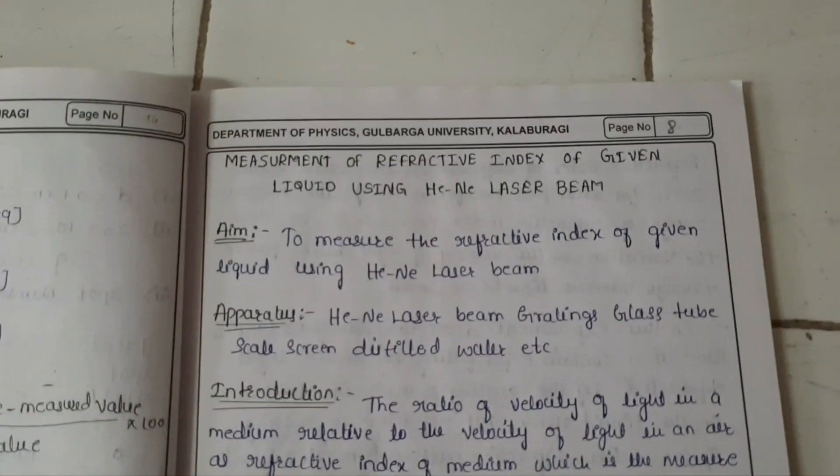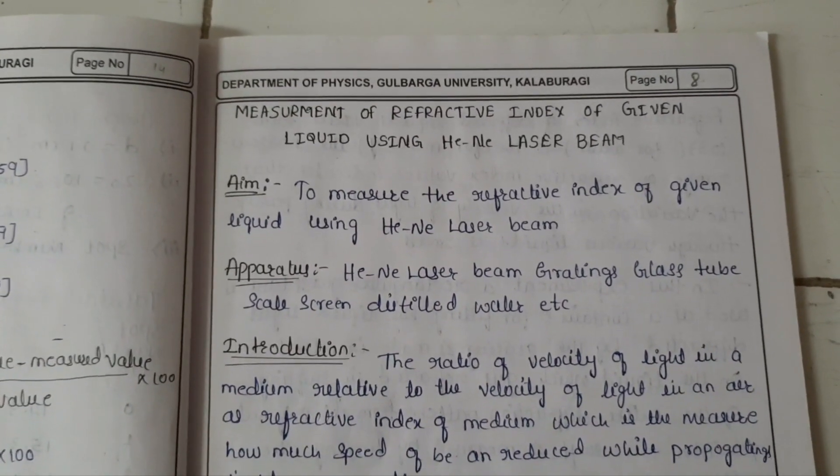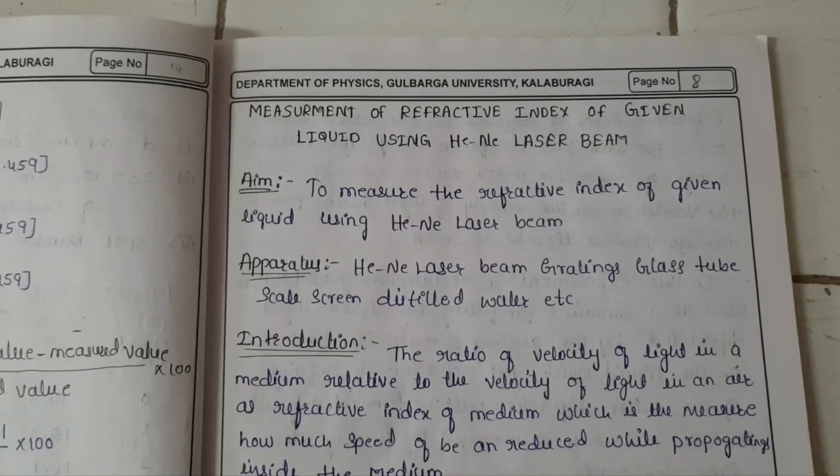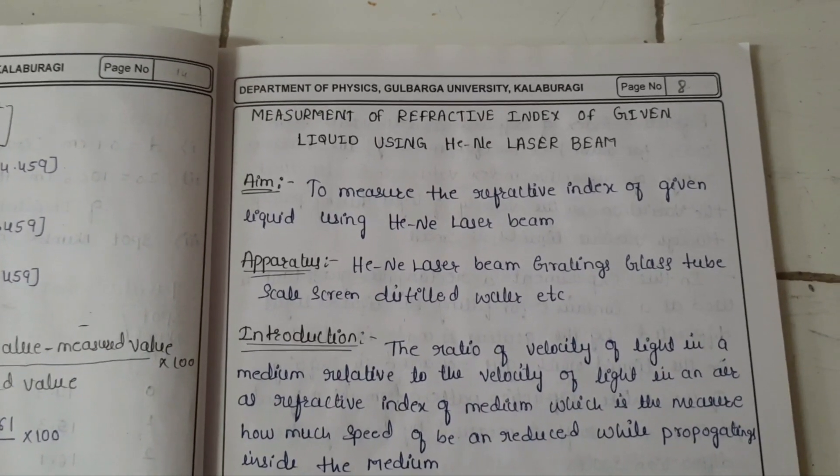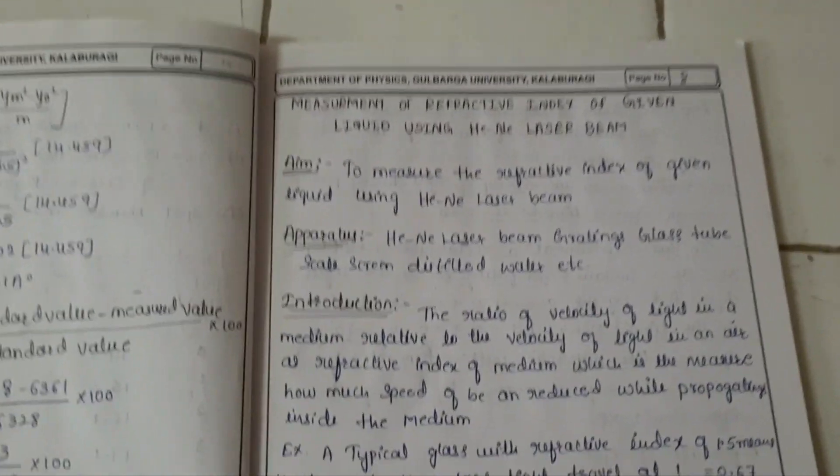So how we can start? First of all, what we have to find out here is to measure the refractive index of a given liquid using helium-neon laser beam. So the aim of the experiment is to find out the refractive index of a given medium. So we are using water here.